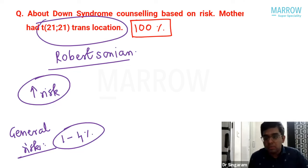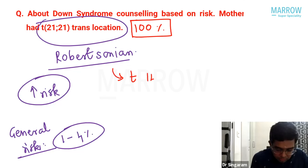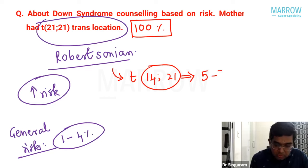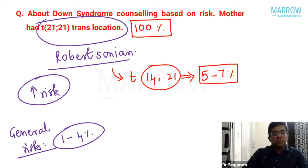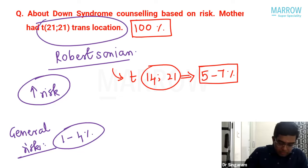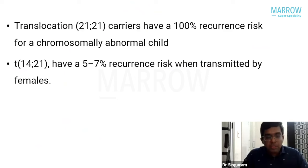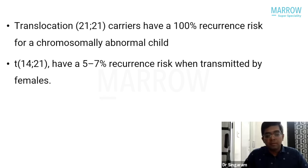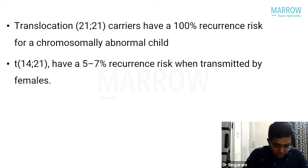Another Robertsonian translocation, T14;21, carries a 5–7% recurrence risk when transmitted by females — greater than the general population risk but far less than T21;21. To summarize: T21;21 translocation carriers have a 100% risk for a chromosomally abnormal child, while T14;21 translocation carriers have a 5–7% recurrent risk. This is an important question likely to be repeated in future exams.